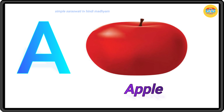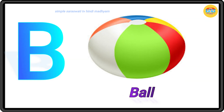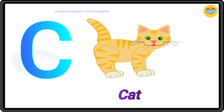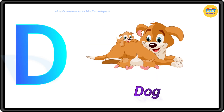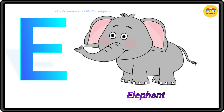A for apple, B for boar, C for cat, D for dog, E for elephant.